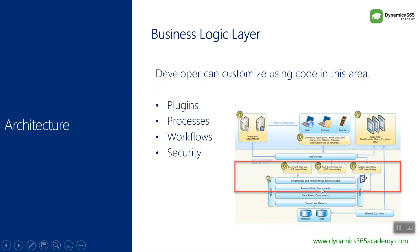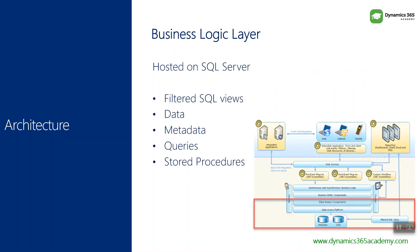On the left-hand side we have security, and on the right-hand side we have processes. Security includes security roles, business units, and field-level security, which are also part of the business logic layer. So this is the business logic layer or application layer, which you can customize. By default the business logic is there, and as a developer you can integrate your own logic as well. In the coming chapters we will see how to develop plugins and custom workflow activities.